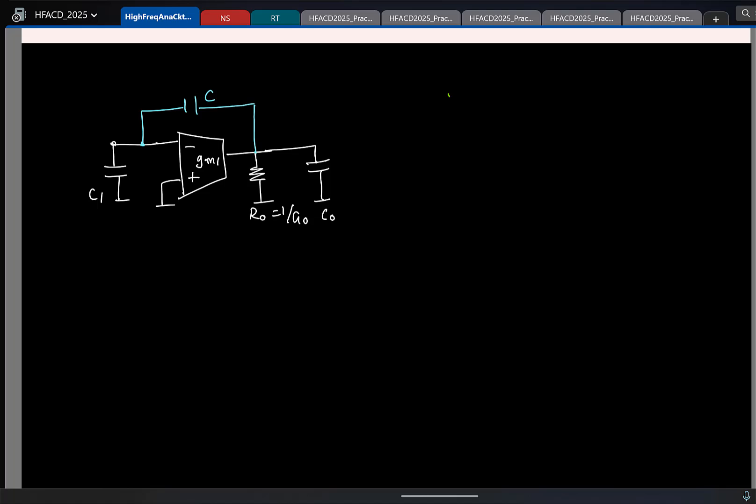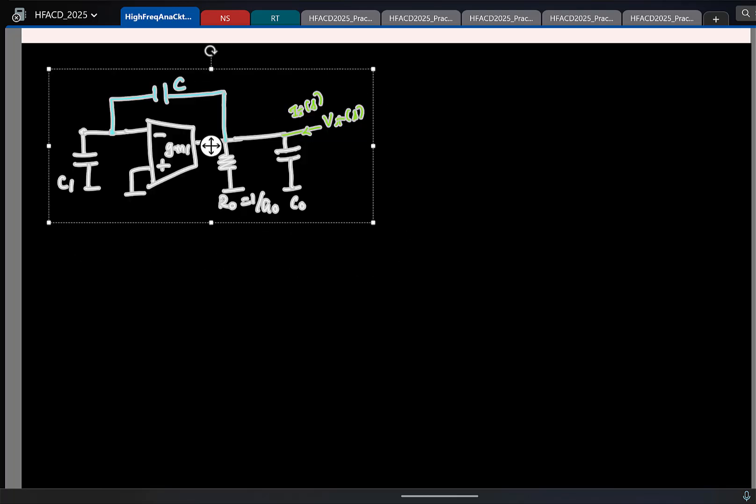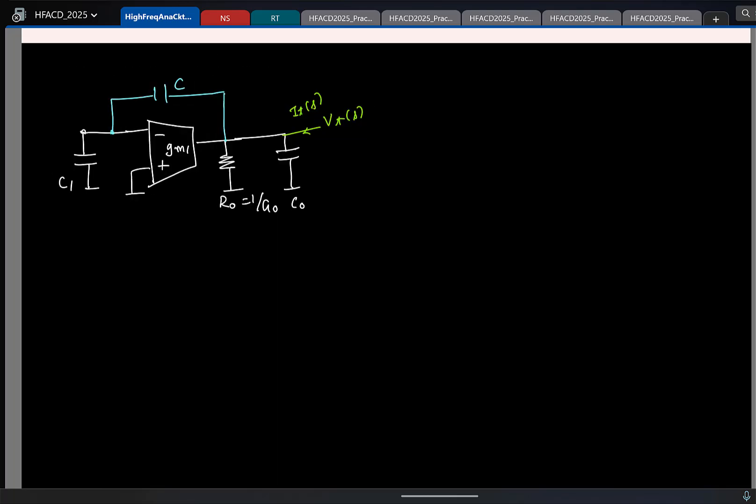So now my goal is to find the effective resistance and the capacitance at the output node here. As usual, you have to basically apply a test voltage in the Laplace domain, find the test current. Now the test current will have a real component as well as an imaginary component. To find the equivalent resistance, do you look at real part or the imaginary part? You look at the real part to get the conductance or the resistance. To get the capacitance, you look at the imaginary part. And again, instead of doing the full calculation, I will just give a qualitative explanation.